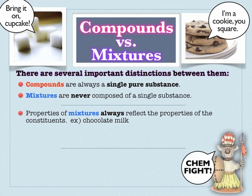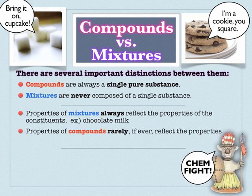The properties of mixtures always reflect the properties of the constituents — the things that make it up. A great example is chocolate milk: you take chocolate with its texture, taste, and color, mix it with milk and its properties, and you end up with a blend of the two. Salt water is another example — salty mixed with wet gives you something salty and wet. The Reese's peanut butter cup is a classic example: peanut butter covered with chocolate gives you two great tastes that taste great together.